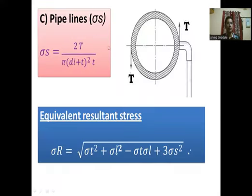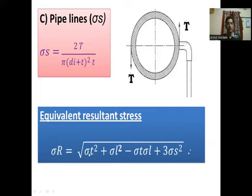Next is the shear stress sigma_S (pipeline/radial stress): sigma_S = 2T / (π × (DI + T)² × T). The equivalent resultant stress sigma_R is given by the distortion energy theory: sigma_R = √(sigma_T² + sigma_L² − sigma_T × sigma_L + 3 × sigma_S²).